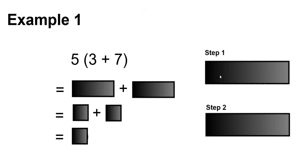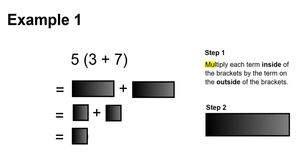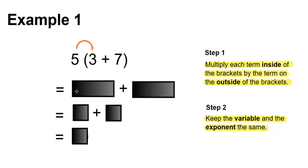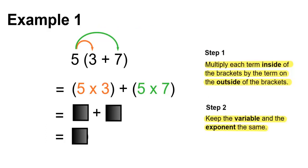Example 1. Step 1: Multiply each term inside the brackets by the term on the outside of the brackets. Step 2: Keep the variable and the exponent the same. In this first example, there is no variable or exponent, so we'll just do step 1. 5 times 3 plus 5 times 7. 5 times 3 is 15, plus 5 times 7 is 35, and 15 plus 35 is 50.